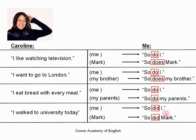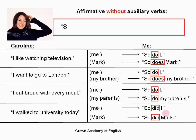So the rule is: when agreeing with an affirmative without auxiliary verbs, the form is: so + verb 'to do' (in the correct form) + subject.